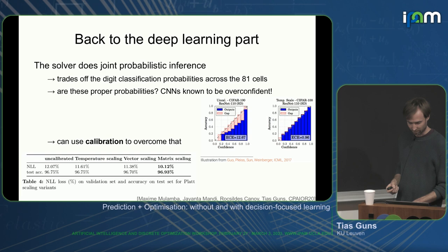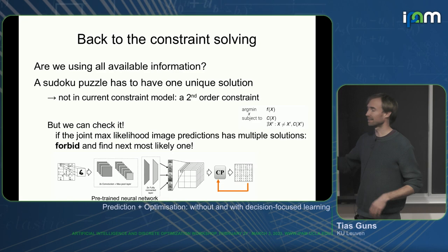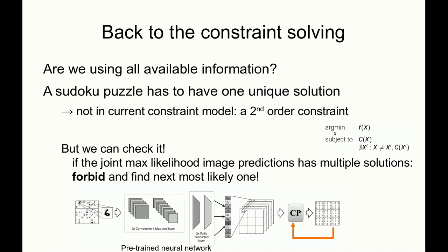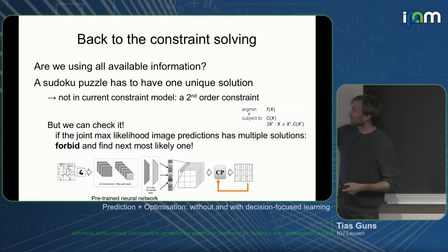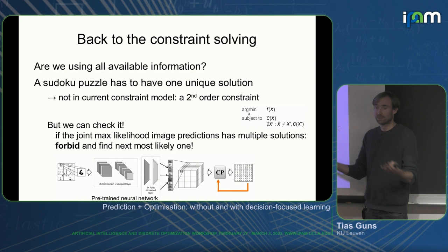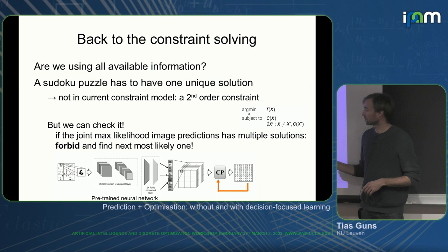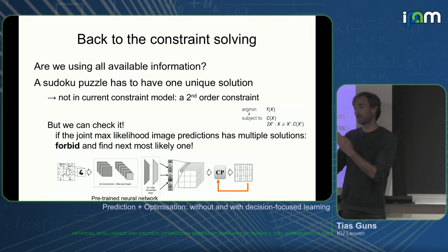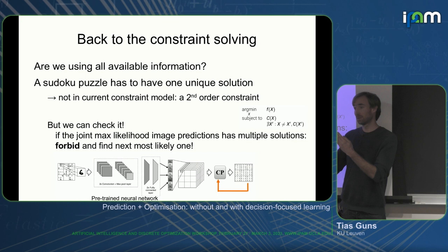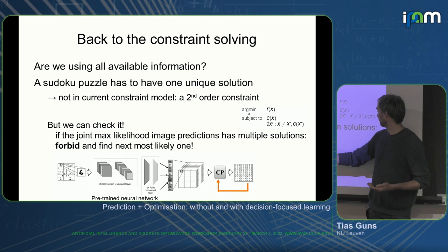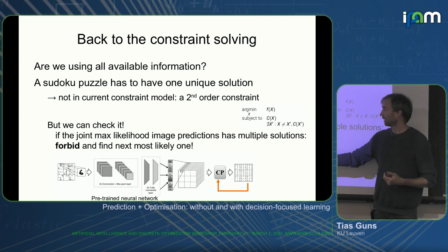Are we using all available information? These newspaper Sudokus actually have to have a unique solution — that's part of the definition, otherwise people get frustrated. But this is not something you can encode in a constraint solver directly. It's a second-order constraint: there exists no other completion of the empty cells that also satisfies all constraints. We can have a meta-routine: if we find an interpretation, we check whether another one fills in the blanks differently. If so, we add a no-good cut and find the next most likely interpretation.